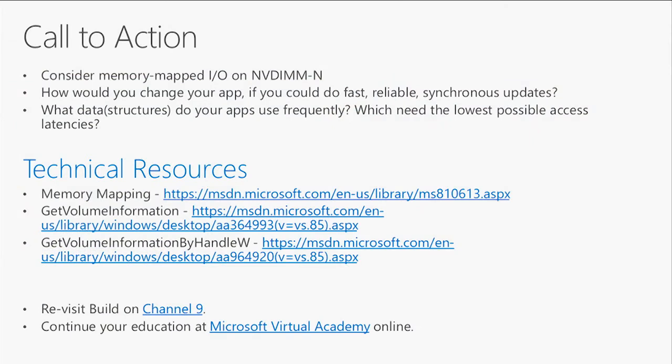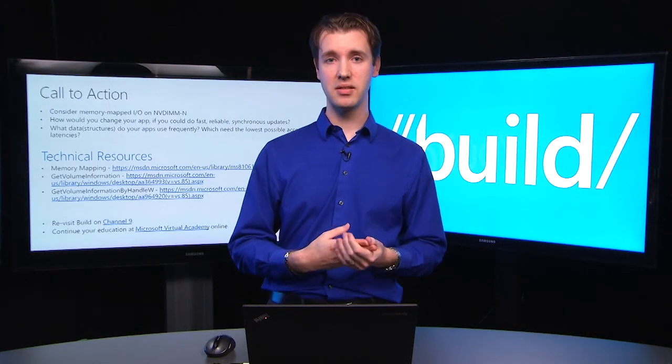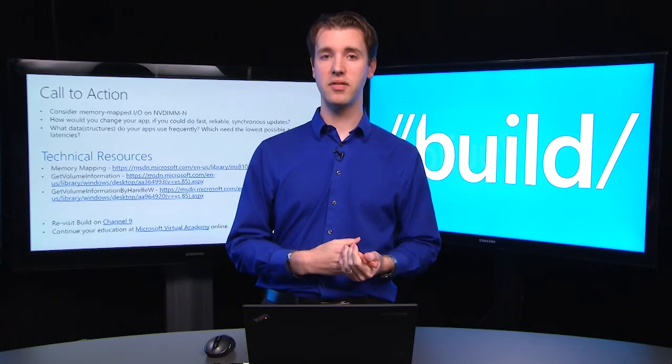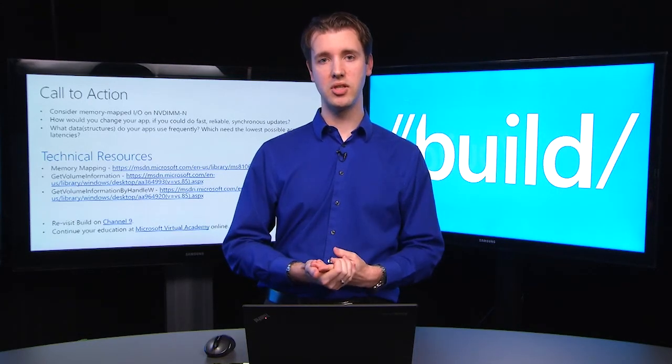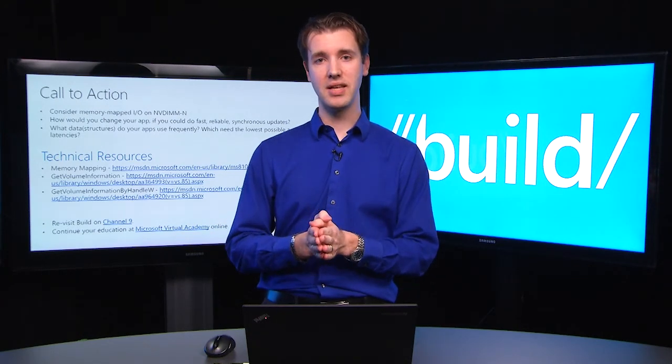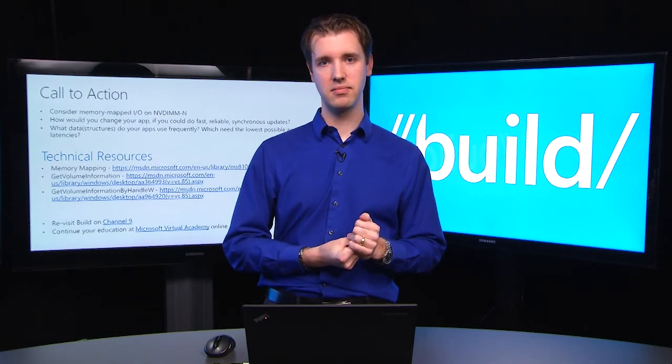In closing, a few resources. Technical resources on memory mapping APIs - those APIs haven't changed since 1993 when that article on MSDN was authored, which is amazing that we can reuse them. Secondly, information on get volume information for your apps to figure out if they're running on a DAX volume. And lastly, think about how memory mapping on NVDIMM devices could be used by your apps to significant effect, given the latencies you've seen today and the throughput you can achieve. Do you have data structures your apps rely on that need to be updated very quickly? Great candidate for this. Thanks for spending the time and watching the video. Have a good evening.